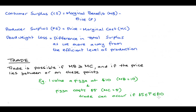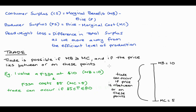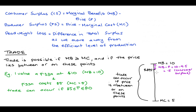We can show all of this visually. We have our marginal benefit at the top, that's $10, marginal cost at the bottom, and price can be anywhere between or on these points. Once we have an appropriate price — let's say $9.50 for the pizza — we can break up that trade into consumer and producer surplus. For consumer surplus, we take the difference between the marginal benefit and the price: $10 minus $9.50 equals $0.50. The consumer was willing to pay up to $10, but they only had to pay $9.50, so they get $0.50 surplus.